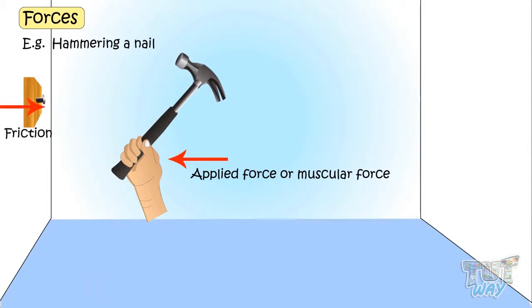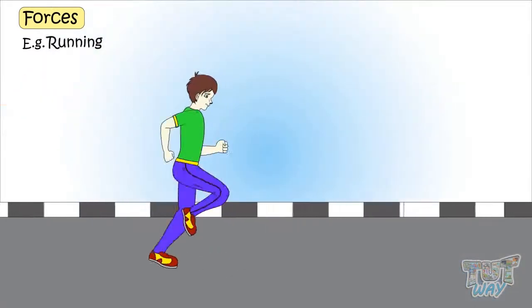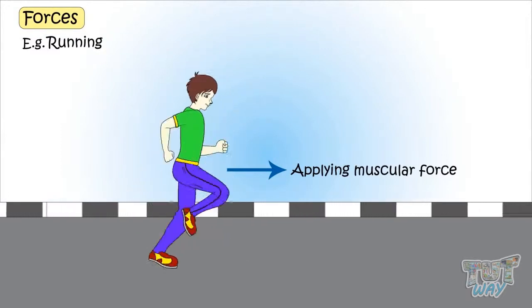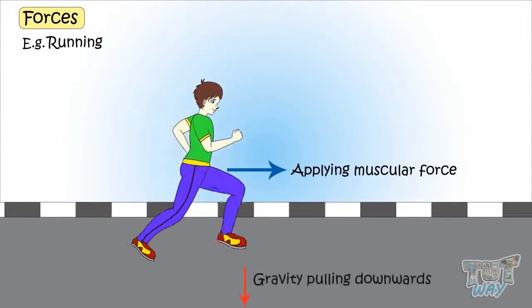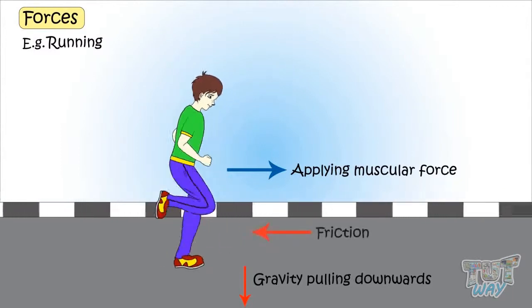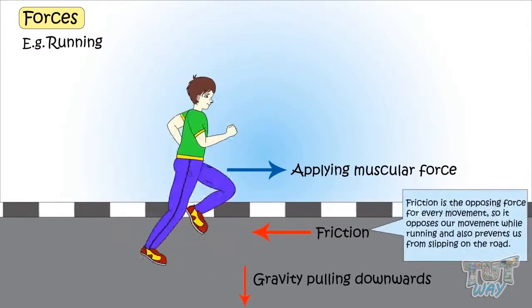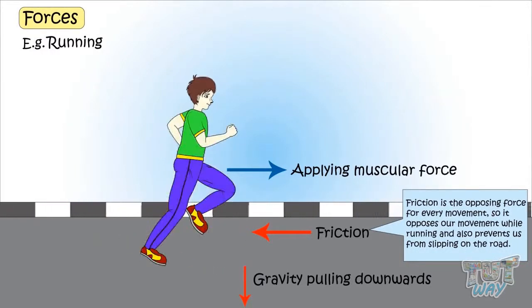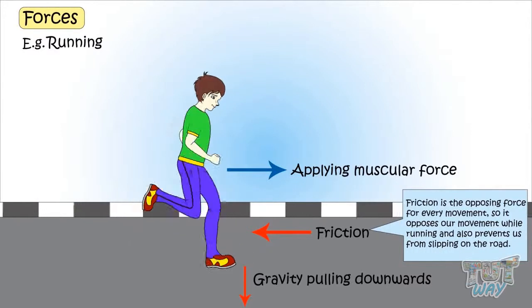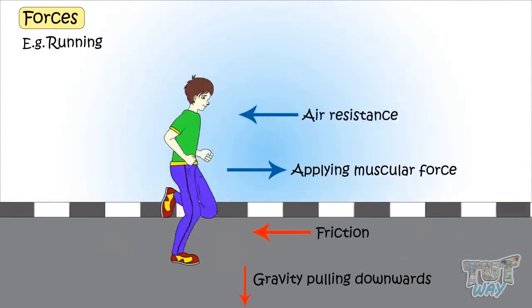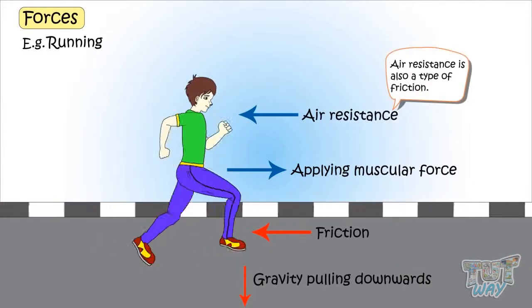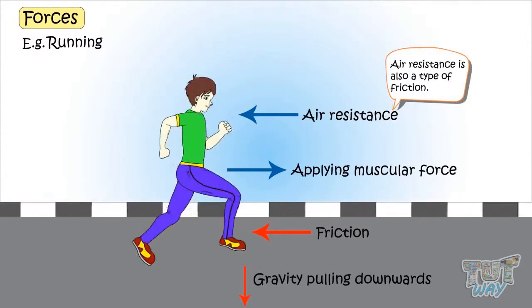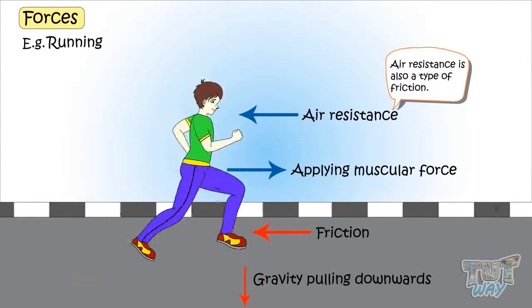Now let's see the forces acting while we are running. We are applying muscular force to move forward. Gravity is pulling us downwards. Friction, as we know, is the opposing force for any movement, so it opposes our movement and also prevents us from slipping on the road. Air resistance is also a type of friction that is posed by the air and prevents anything from moving, decreasing the speed of the moving object.